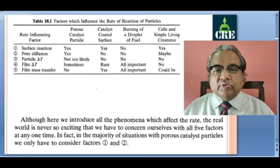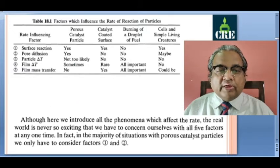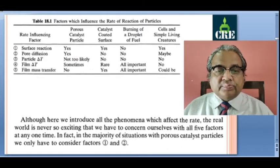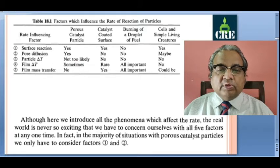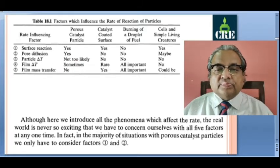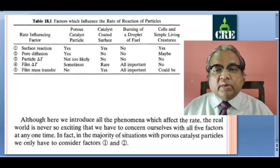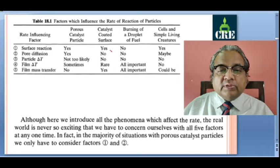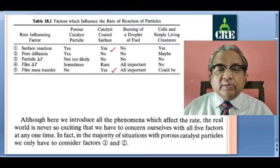This table represents the five factors which influence the rate of reaction of the particle. For porous catalyst particles: surface reaction is present, pore diffusion comes into play, particle delta T and film delta T are not likely, and there is no film diffusion. For catalyst coated surfaces: surface reaction yes, film delta T and film mass transfer are important, but core diffusion and particle delta T can be neglected.